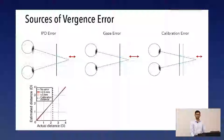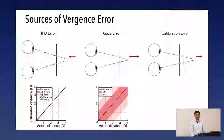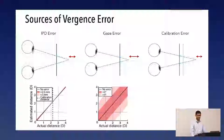Simulations show that IPD error — even five millimeters, which is a huge error given most people's IPDs fall within 55 to 70 millimeters — causes almost no change. But if gaze is off by one or two degrees, you get a pretty large error. If the calibration distance is wrong, you get an error that increases as the object gets closer, but it's still not as large as the gaze error. So gaze error is the most significant source that is hard to eliminate.